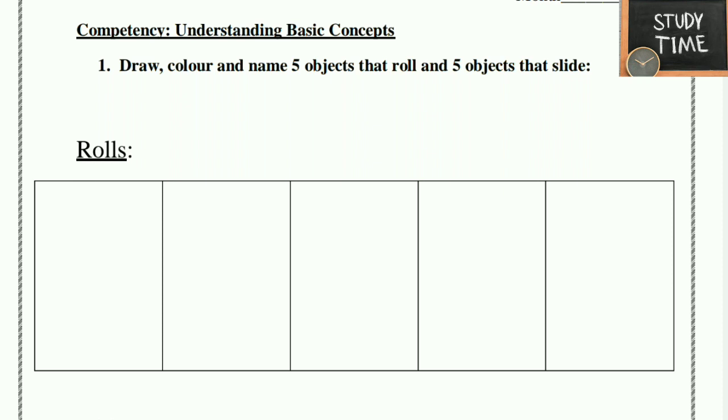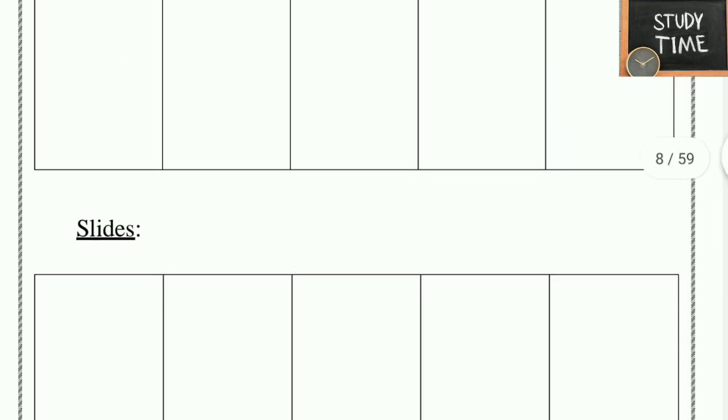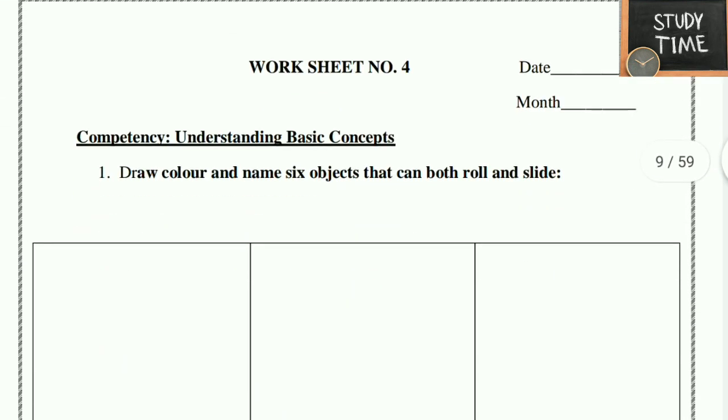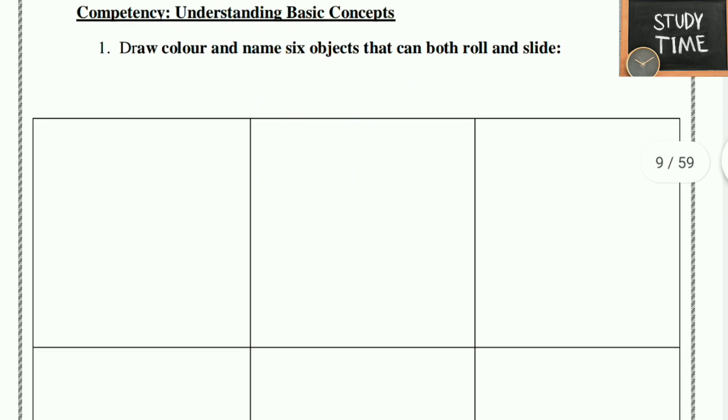Next, draw, color and name six objects that can both roll and slide. Both roll and slide you have to write. Example: you have to write pipe, pen, pencil. You can draw like that.